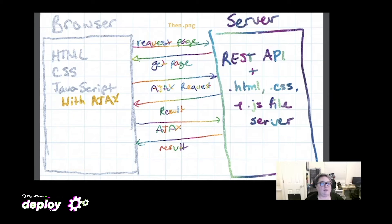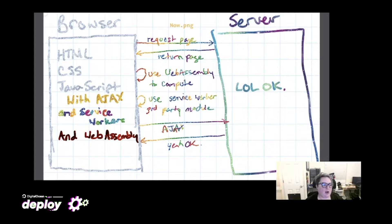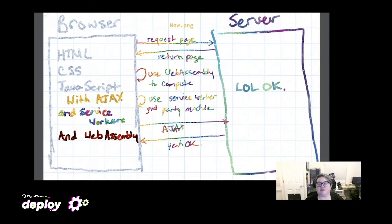Then came Ajax — a sparkly new toy. You requested a page, you got a page, but then you could make an Ajax request and parse in the result. That really made things change. There are still servers where everything is over there, but you've also got REST APIs with static file servers, serverless, and all sorts of different architectures because of Ajax. Now we have service workers and WebAssembly, and the server in this picture is just as likely a cluster of serverless functions.